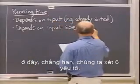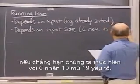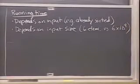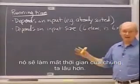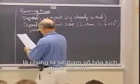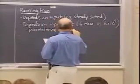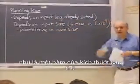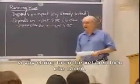Here, for example, we did six elements. It is going to take longer than if we do six times ten to the ninth elements. So if we are sorting a lot more stuff, it is going to take us a lot longer. Typically, the way we handle that is we are going to parameterize things in the input size. We are going to talk about time as a function of the size of things that we are sorting, so we can look at what is the behavior of that.